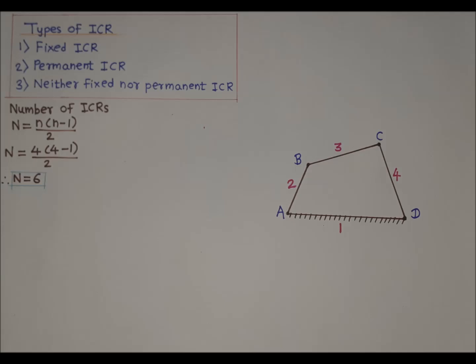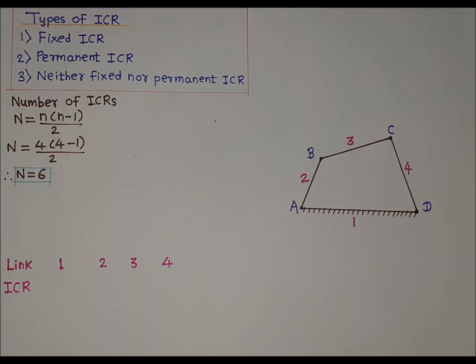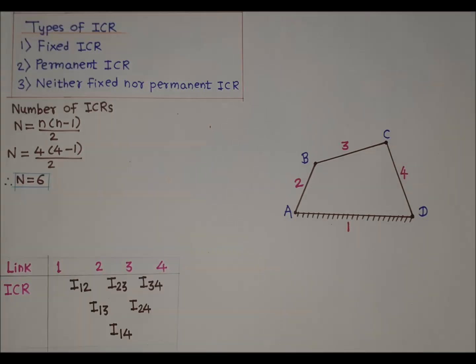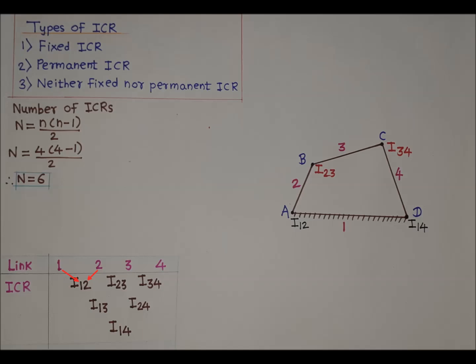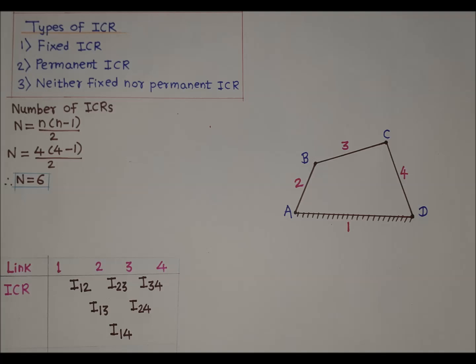Now we will write the six ICRs. As there are four links, in the first row we write links one, two, three, and four. In the next row we write ICR i12, i23, and i34. In the following row we write ICR i13 and i24. In the last row we have ICR i14.